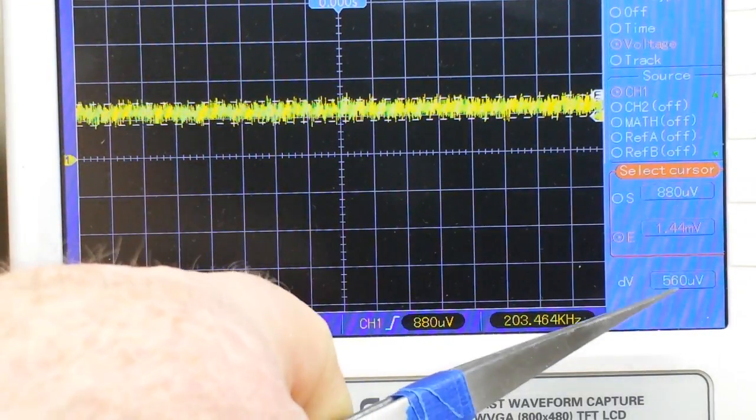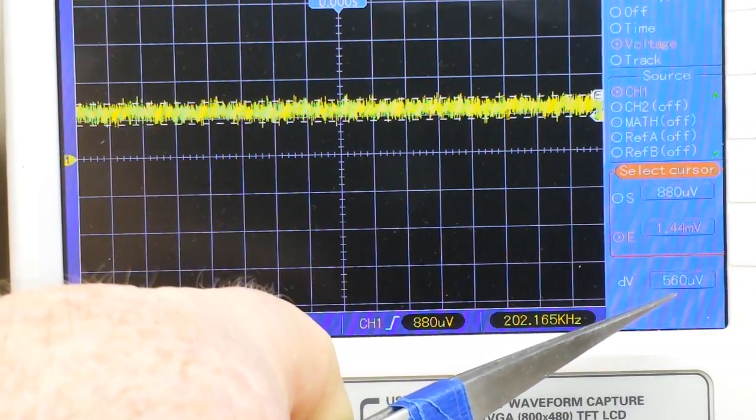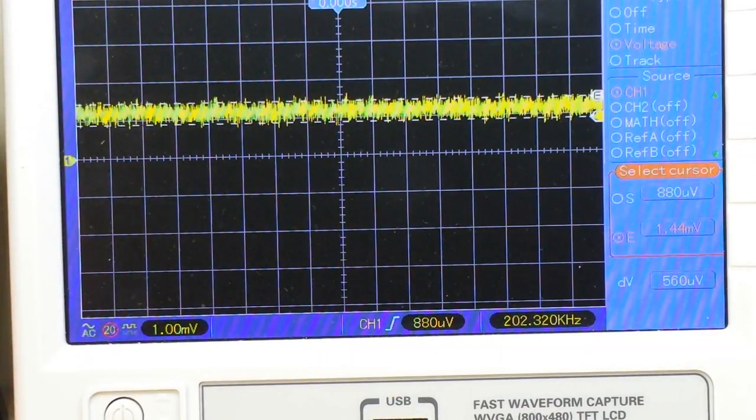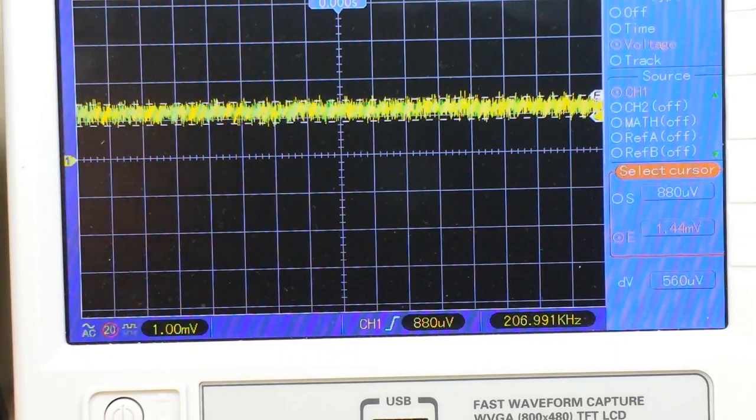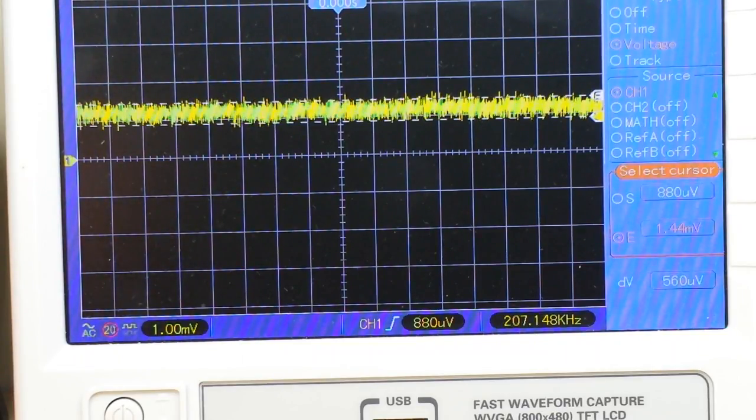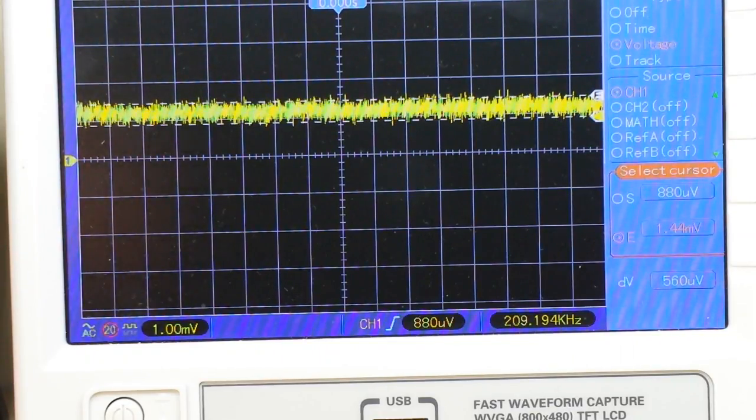You can look here now and see that we have 560 microvolts. So that is considerably better. And it's also a much better picture. Just little tricks and how to use your scope to get better images and help you understand your circuits and what you're measuring a little bit better.